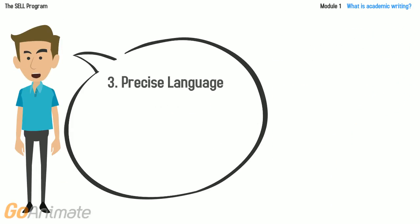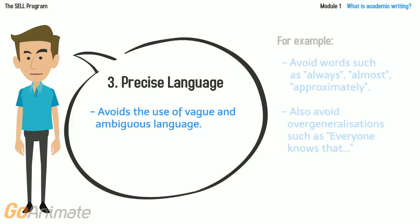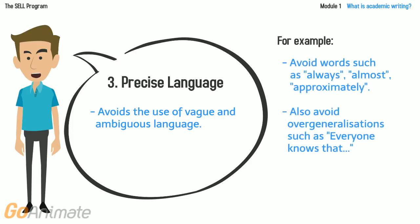Precise language avoids the use of vague and ambiguous language. For example, avoid words such as always, almost, and approximately. Also, avoid using over-generalizations.